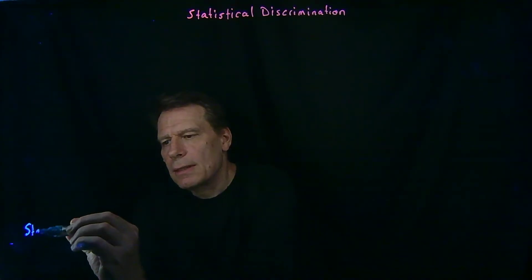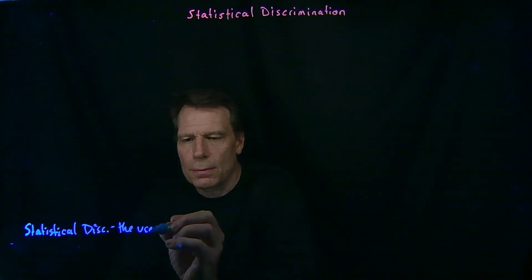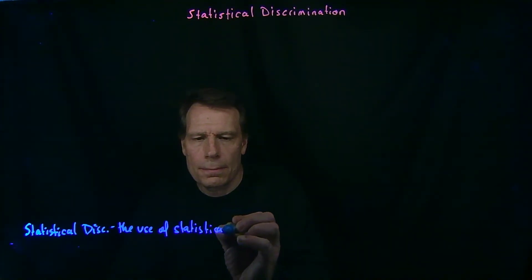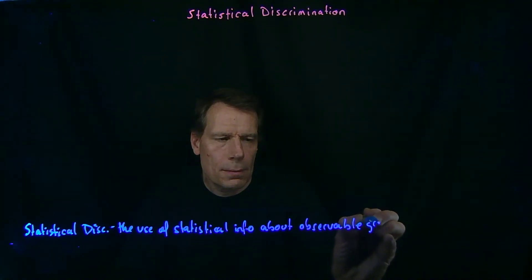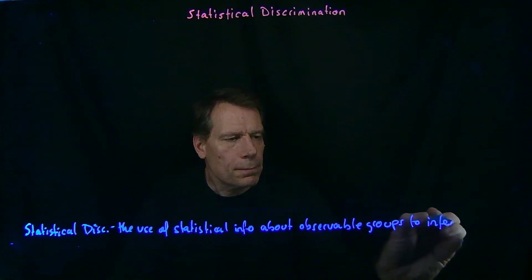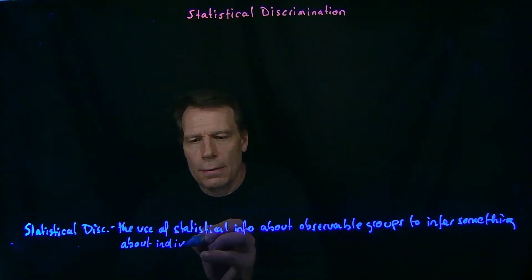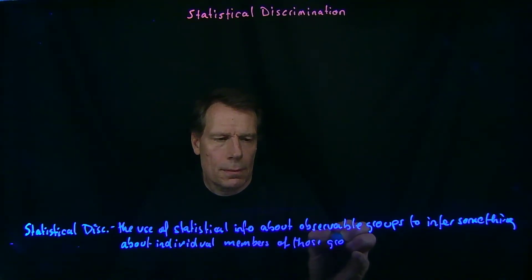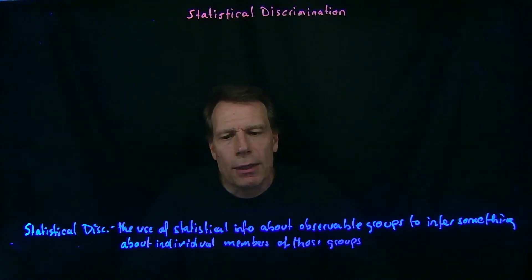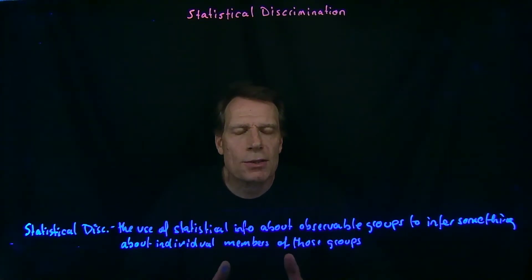So let me define that. Statistical discrimination is the use of statistical information about observable groups to infer something about individual members of those groups. So the insurance companies are using statistical information about groups based on age to infer something about the health risk of individuals who are members of those different age groups. That's what we mean by statistical discrimination.